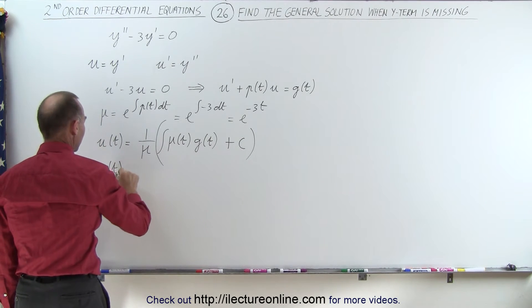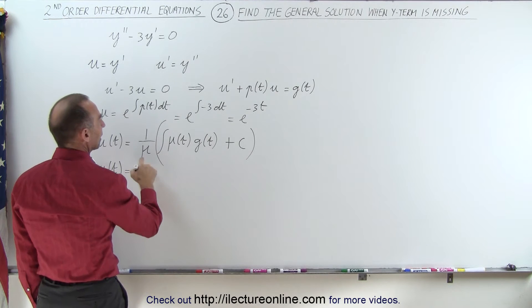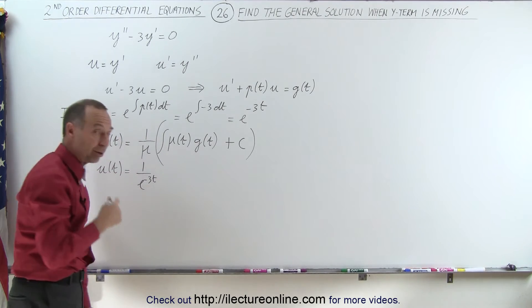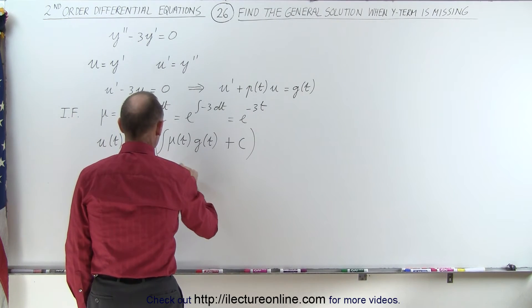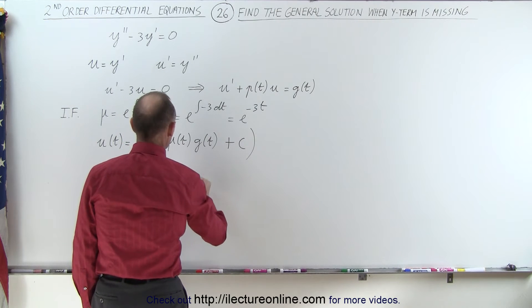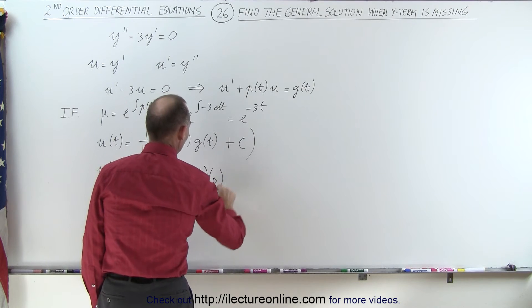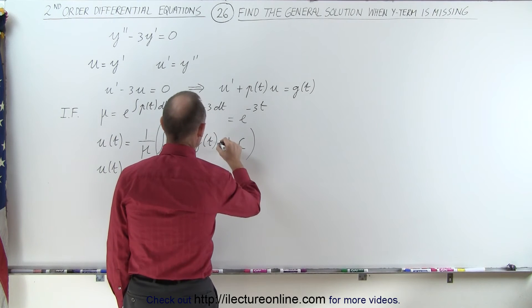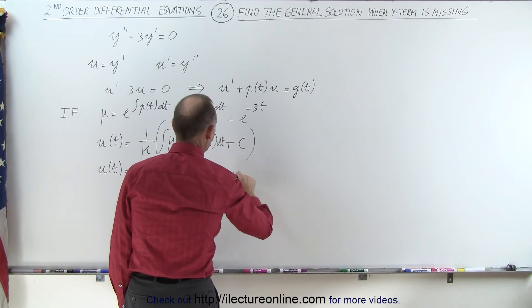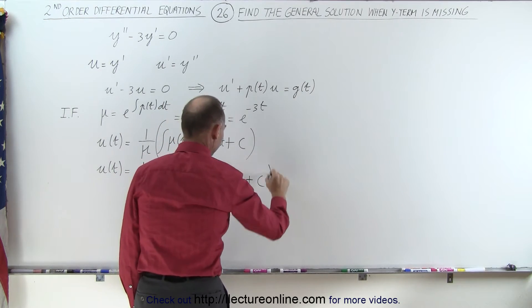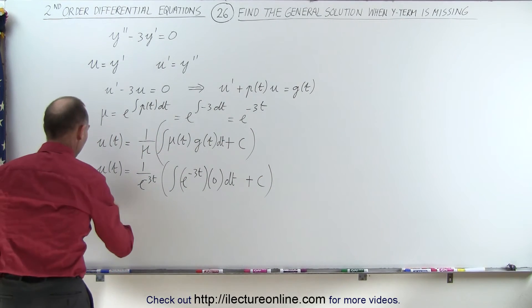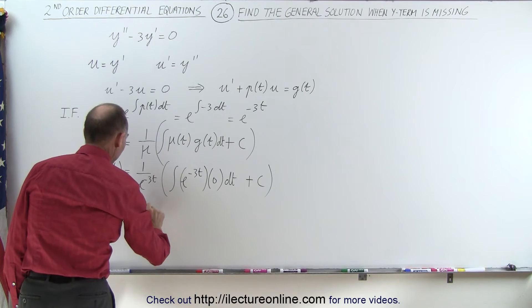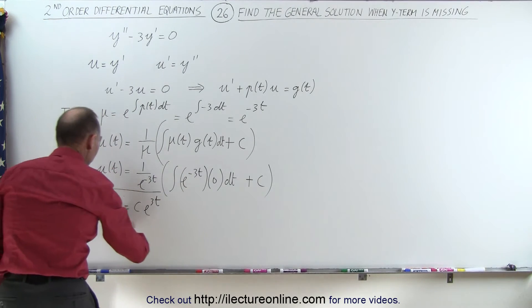So u as a function of t is equal to one over e to the negative three t — which goes to the numerator as e to the positive three t — times the integral of e to the negative three t times g of t, which is zero. The integral of zero is zero, but we still have a constant of integration. So u of t is equal to c times e to the three t, and this is the general solution of the first order differential equation.